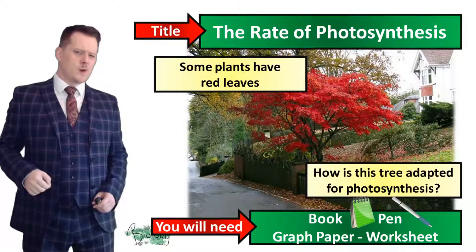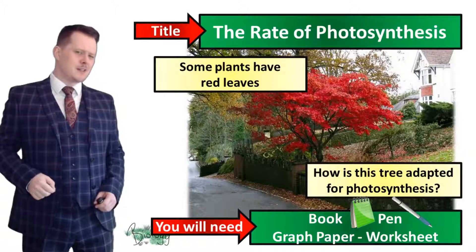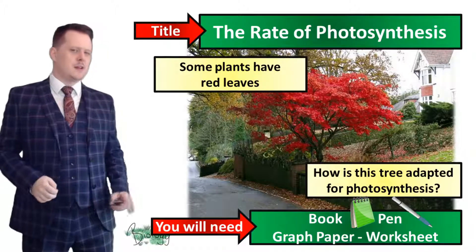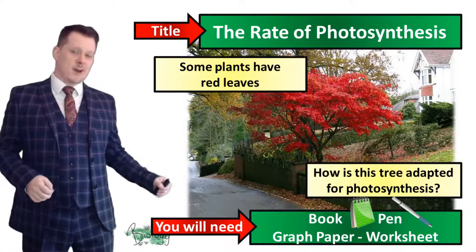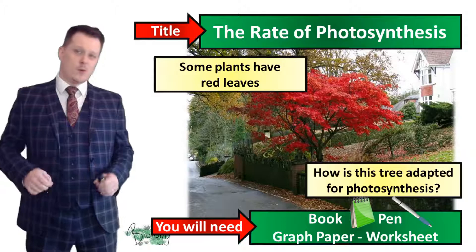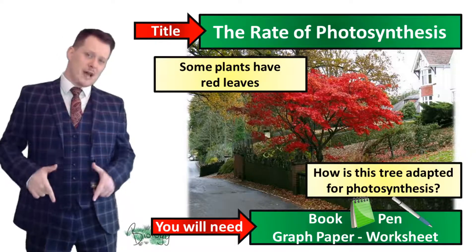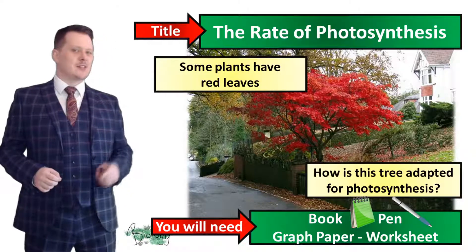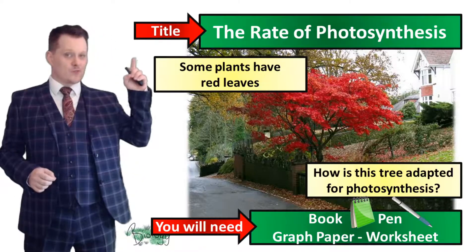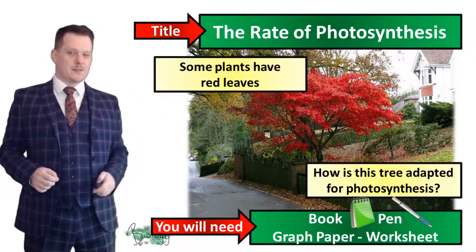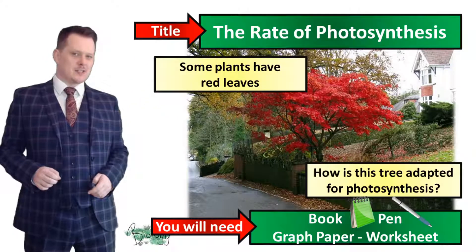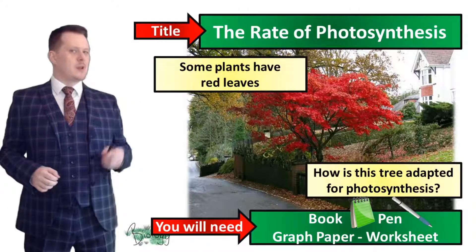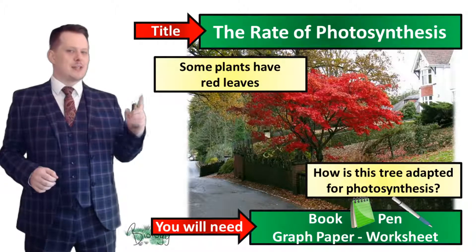Hello and welcome to another one of Mr. Deep in Science lessons. For today's session you're going to need a book, a pen, some graph paper and a worksheet which you can download in the link below. In your books I'd like to get down today's title which is the rate of photosynthesis, and for our starter activity I'd like us to look at some of the plants that have red leaves.